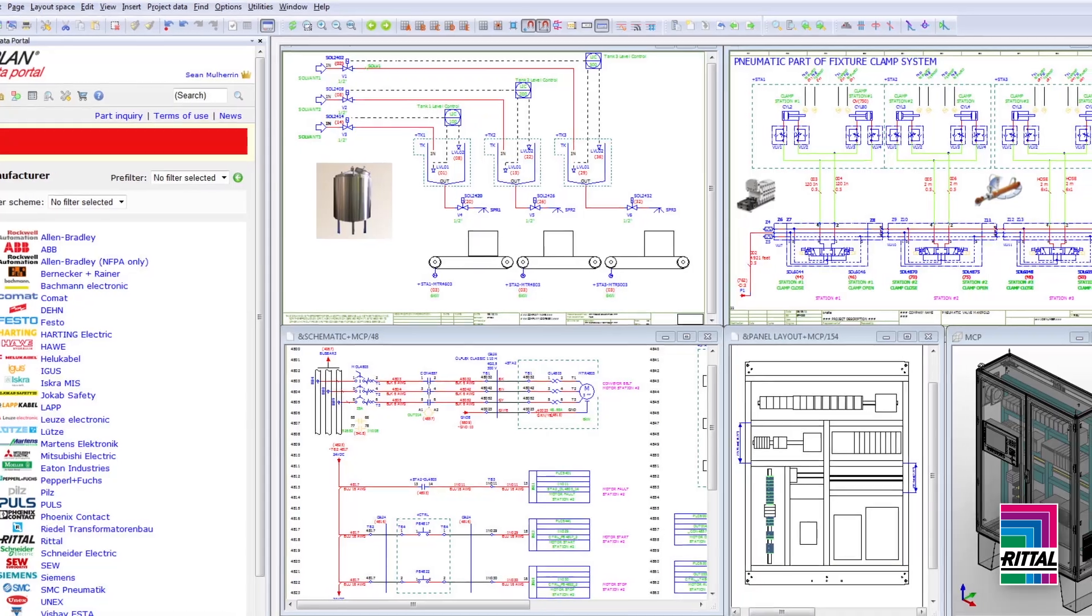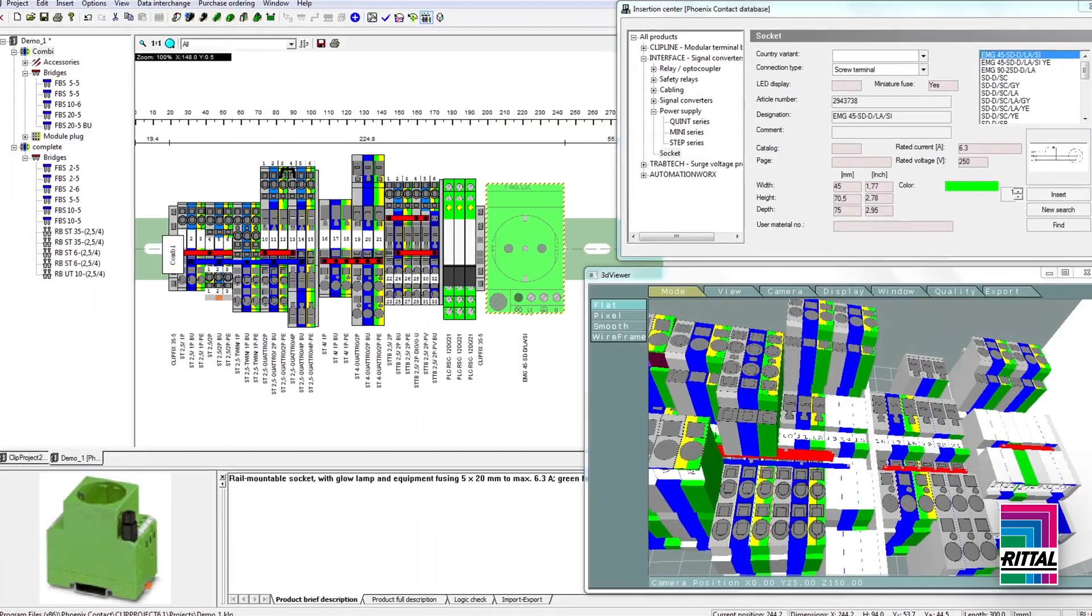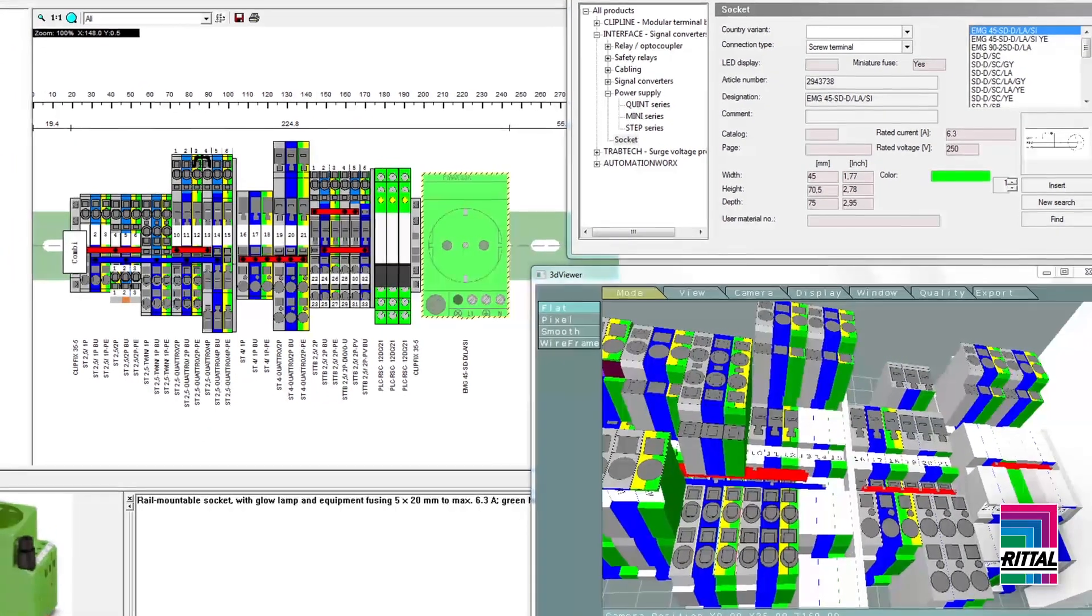ePlan also interacts with other manufacturers' equipment to increase efficiencies, like the CLIP project from Phoenix Contact that automatically selects correct terminals and marks labels.